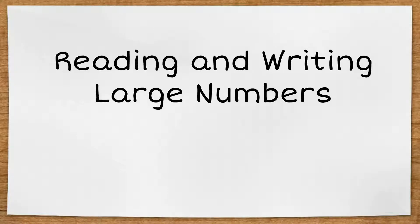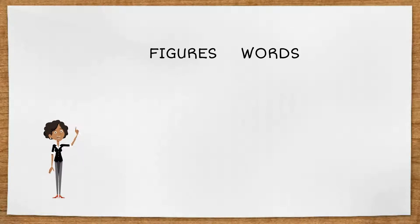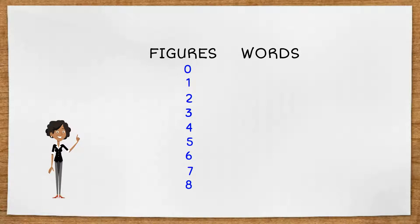In this lesson we're going to learn to read and write large numbers up to a billion. Numbers can be represented in figures or words. Figures are represented by the digits zero, one, two, three, four, five, six, seven, eight, nine.